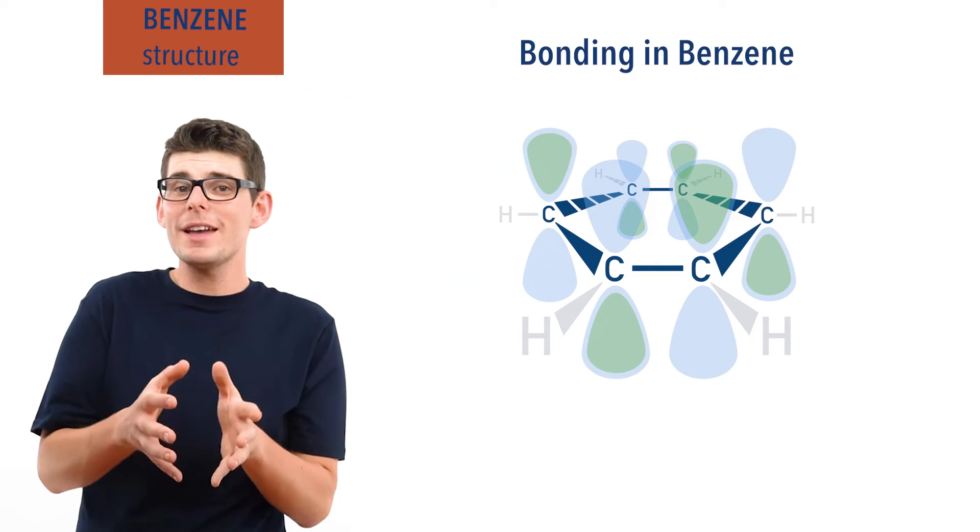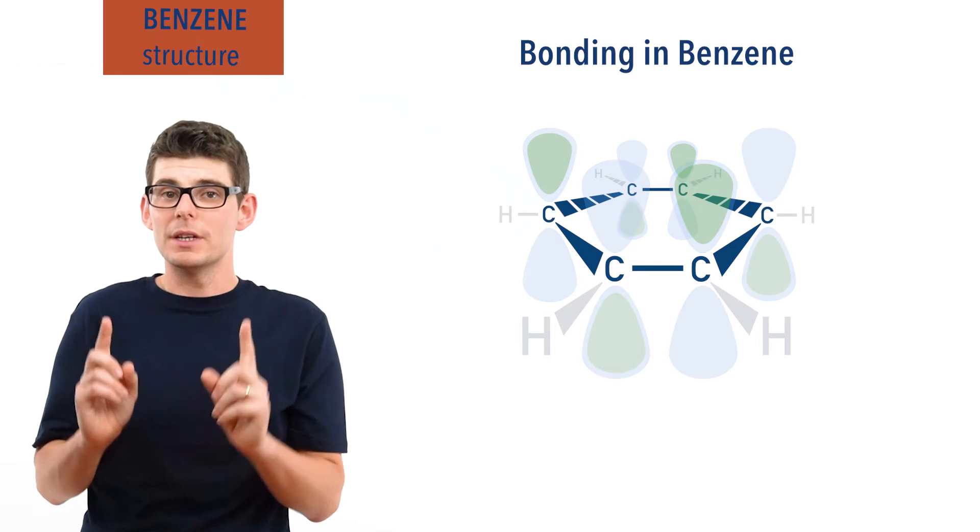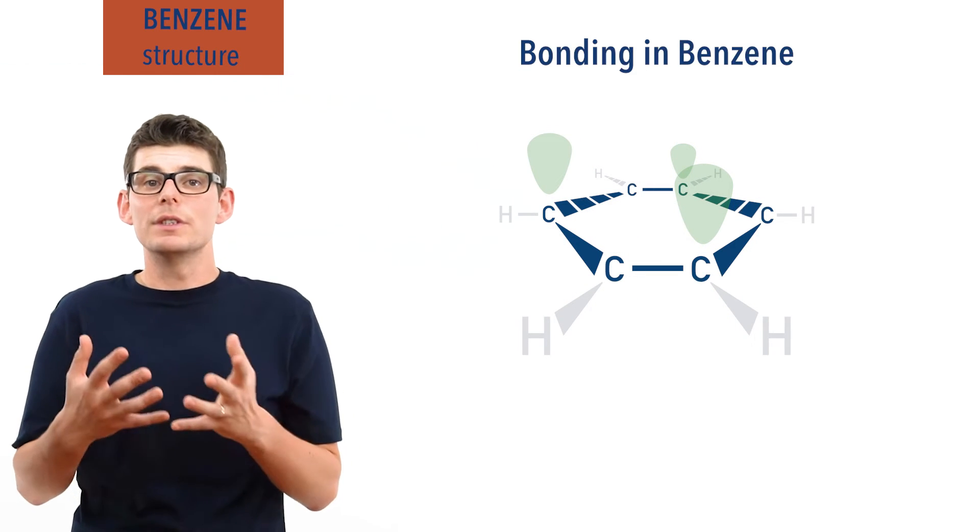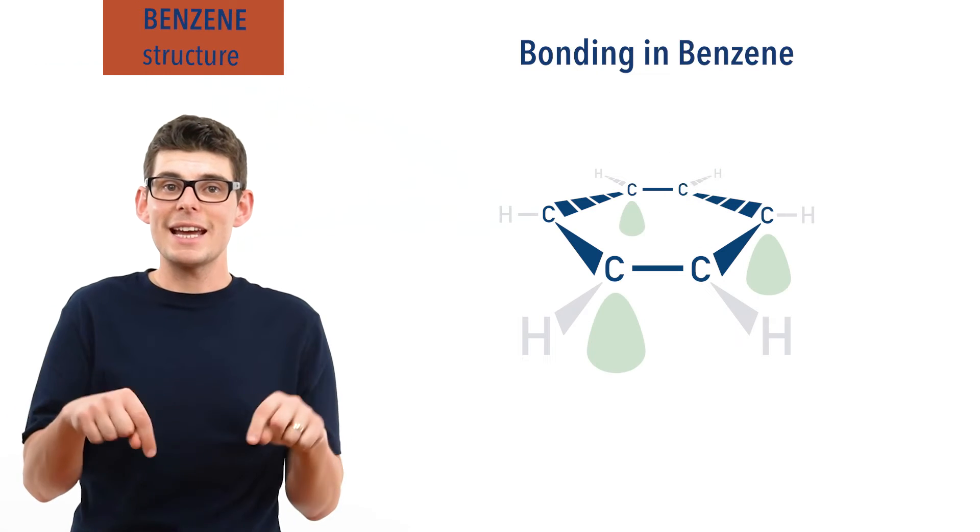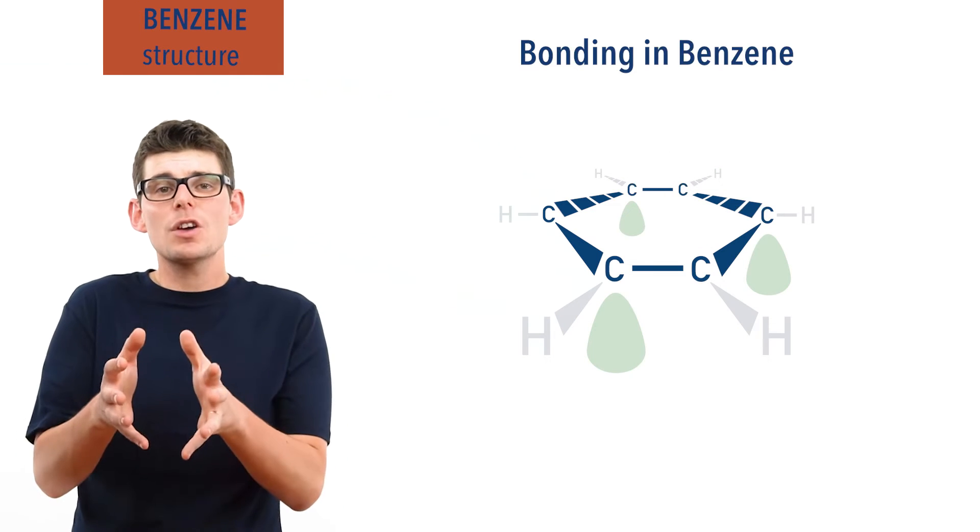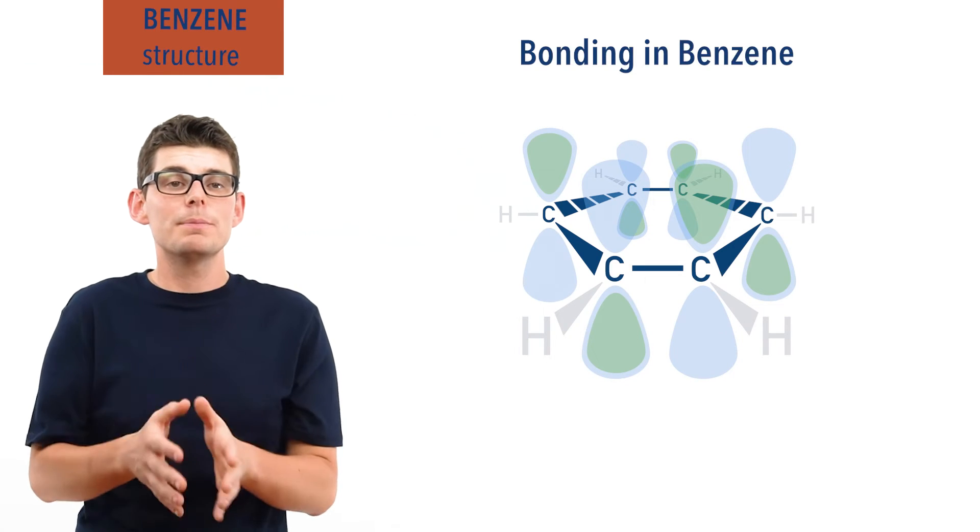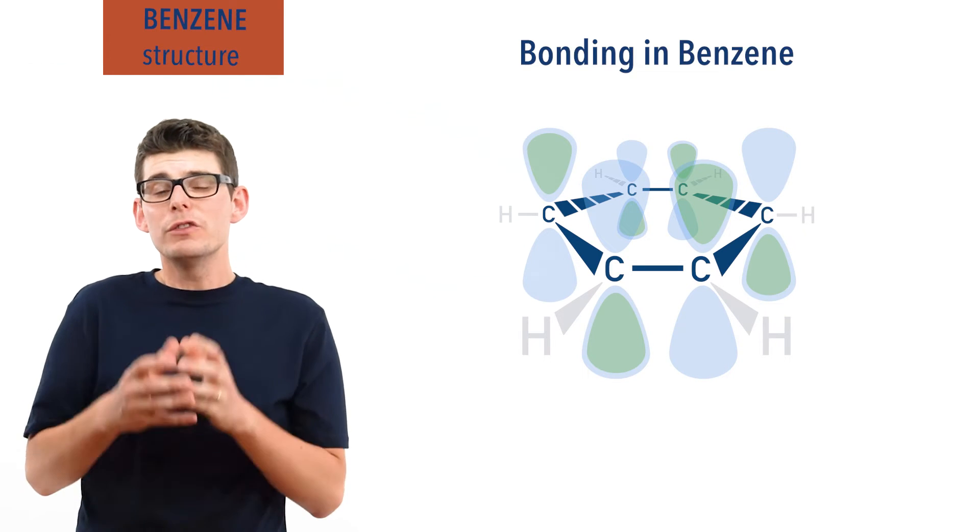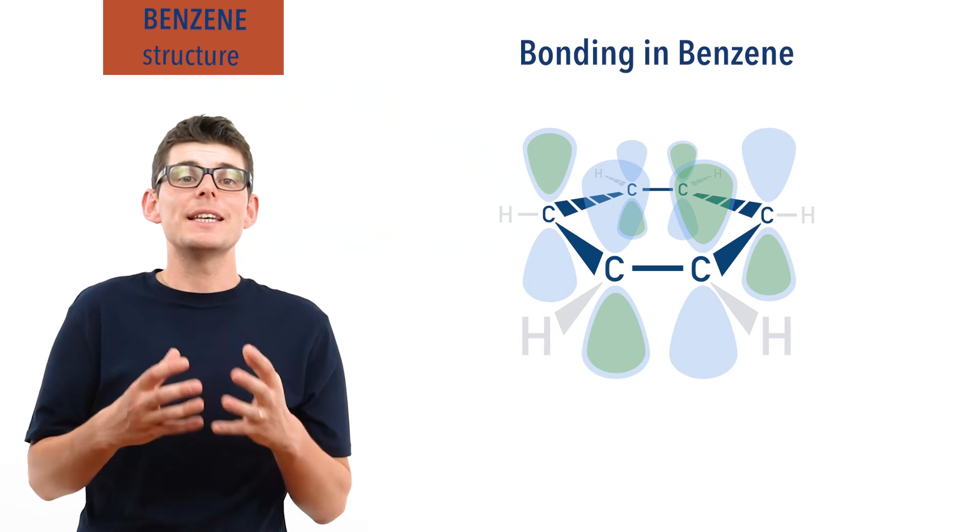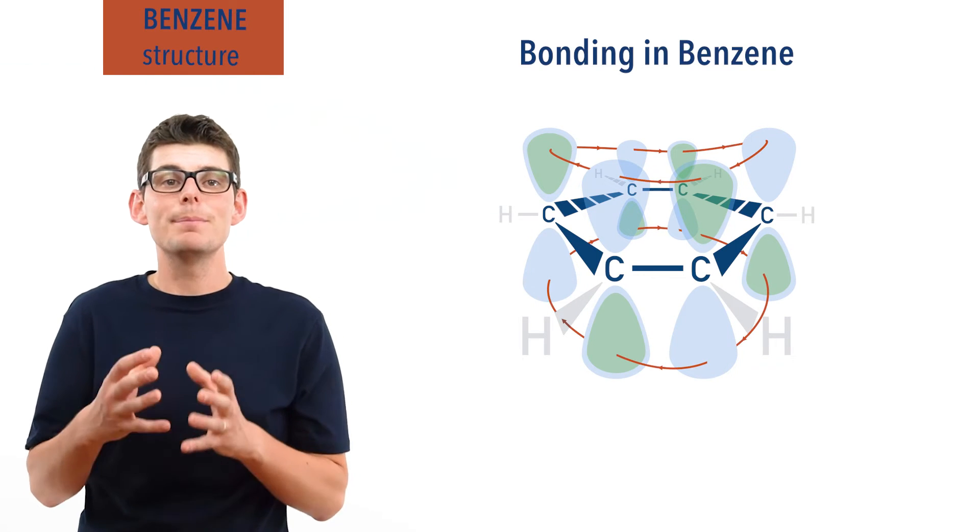There are now essentially three electrons in p-shaped orbitals pointing upwards and three electrons in the same shaped orbitals pointing downwards. Each carbon atom though is still wanting access to another electron to complete its outer shell. To achieve this, the p-orbitals each interact, creating a pi bonding system.